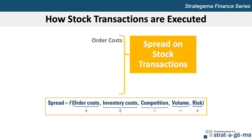Order costs are the costs of processing orders, including clearing costs and the cost of recording transactions. Inventory costs include the cost of maintaining an inventory of a particular stock. For stocks traded on the NYSE or NASDAQ, having multiple market makers promotes competition. When more market makers are competing to sell a particular stock, the spread is likely to be smaller. Stocks with larger trading volume are more liquid because sufficient buyers and sellers are available at any time, making it easier to sell and reducing the risk of a sudden price decline. If the firm has relatively risky operations, its stock price is more volatile, so a market maker holds riskier inventory and therefore sets a higher spread.